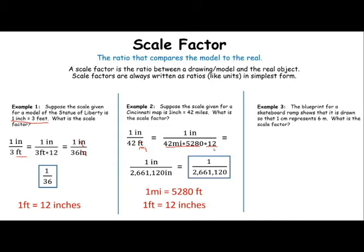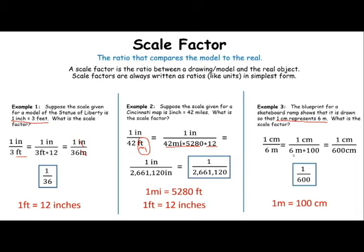Now, the larger the numbers get, the messier it gets, but certainly keep in mind that if we know the conversions, we can always convert the larger to the smaller simply by multiplying through by whatever our conversion rate is. Last one. The blueprint for a skateboard ramp shows that it is drawn so that 1 centimeter represents 6 meters. What is the scale factor? There's your scale. 1 centimeter to 6 meters. I want those to match, so I happen to know that 1 meter is 100 centimeters. I'm going to multiply the bottom by that 100 to turn this meters into centimeters, and now my units match. Since they match, I no longer need them. My scale factor is 1 to 600. That can be just a little bit tricky. There again, the most important part is to keep the word scale in your mind separate from the idea of scale factor. Scales are rates. Scale factors are ratios.